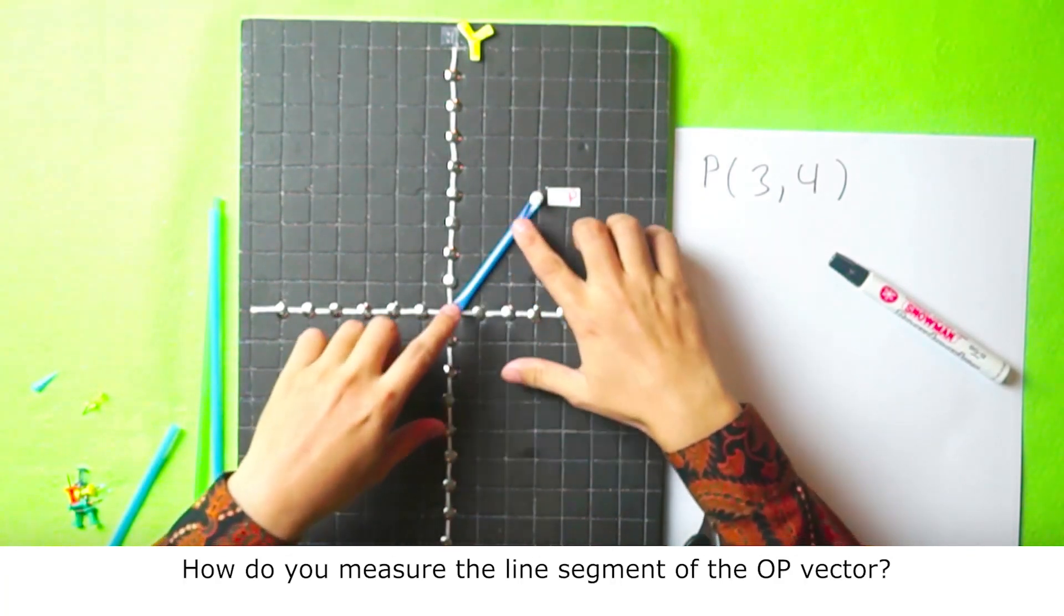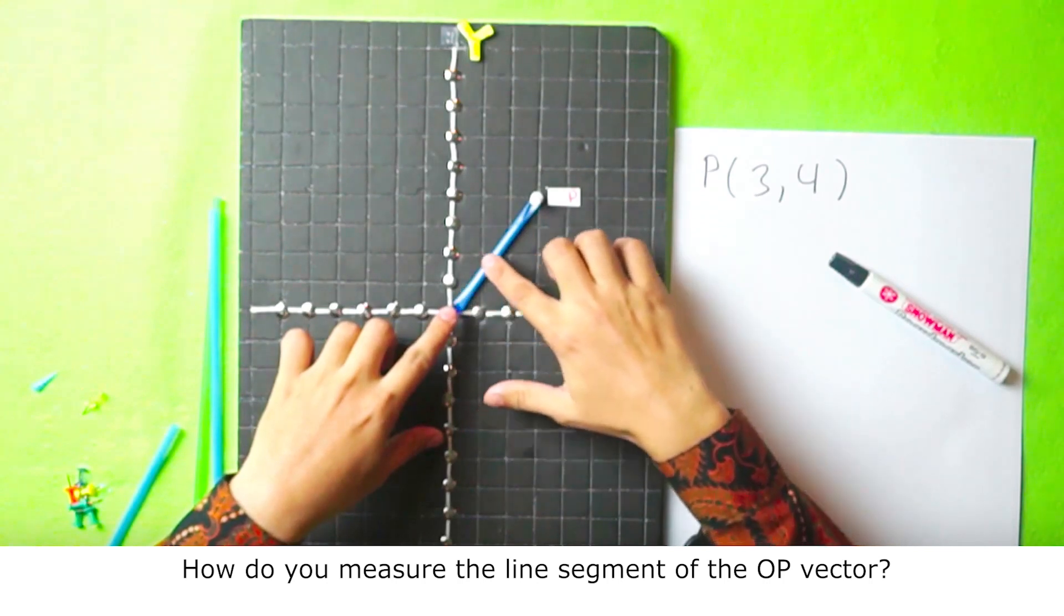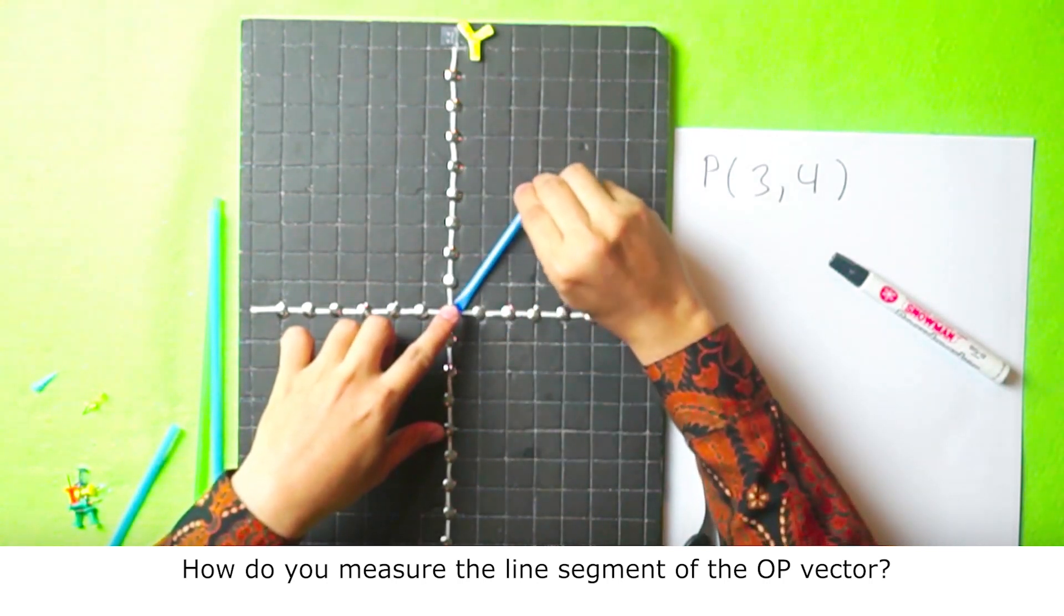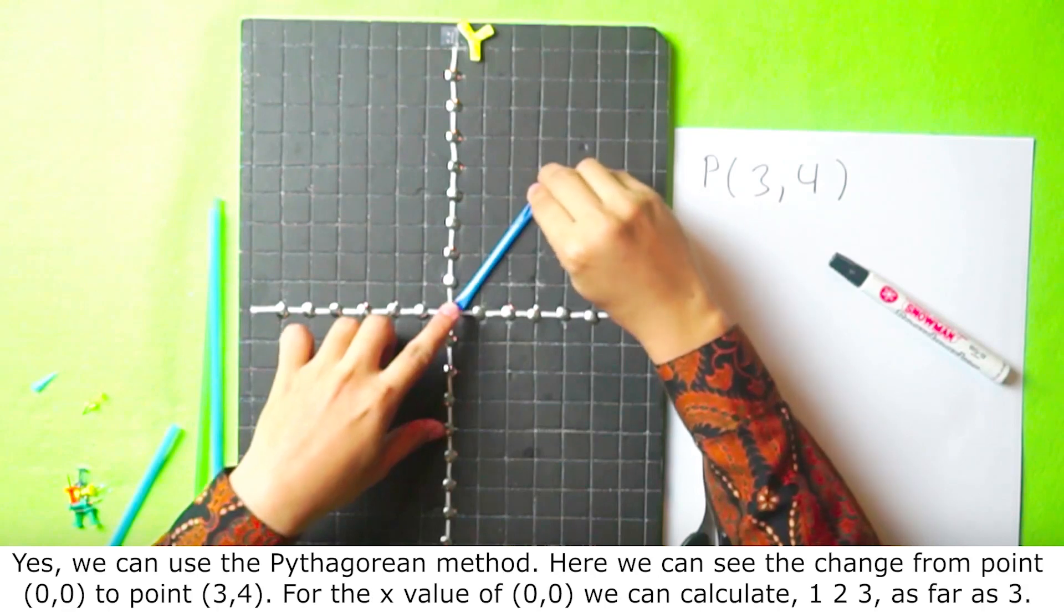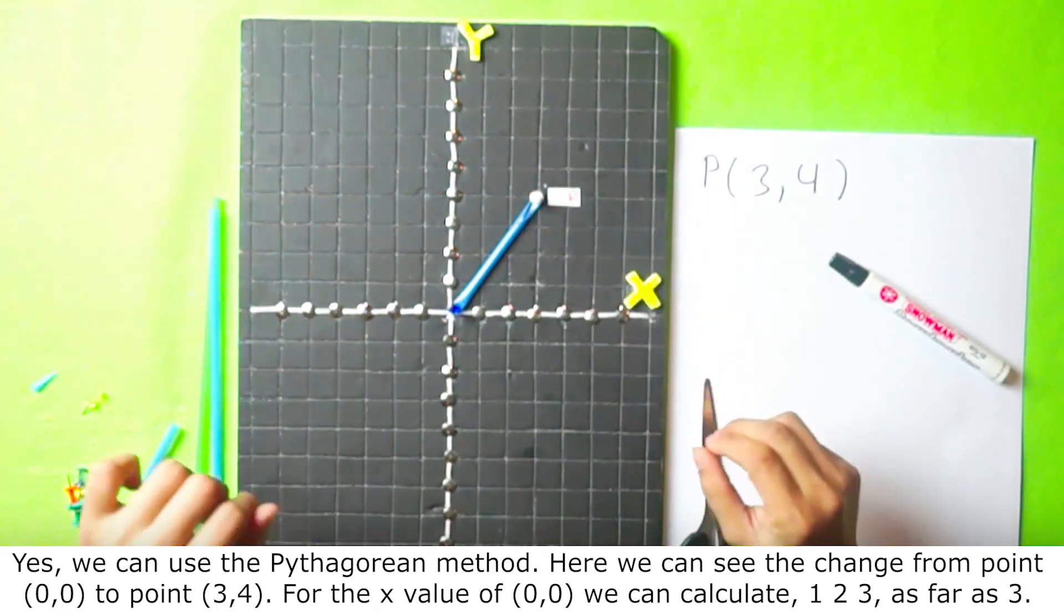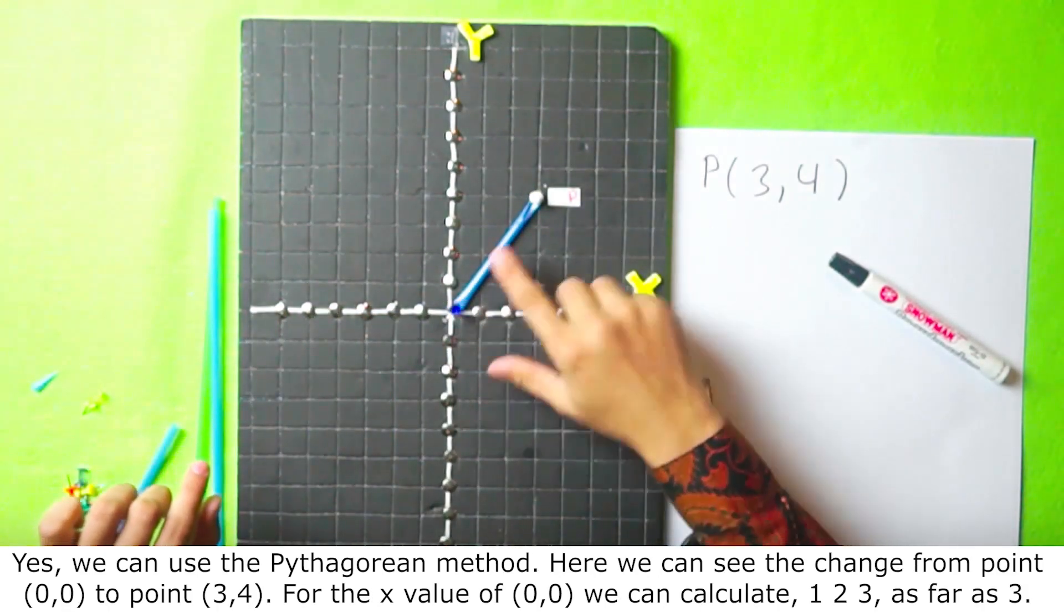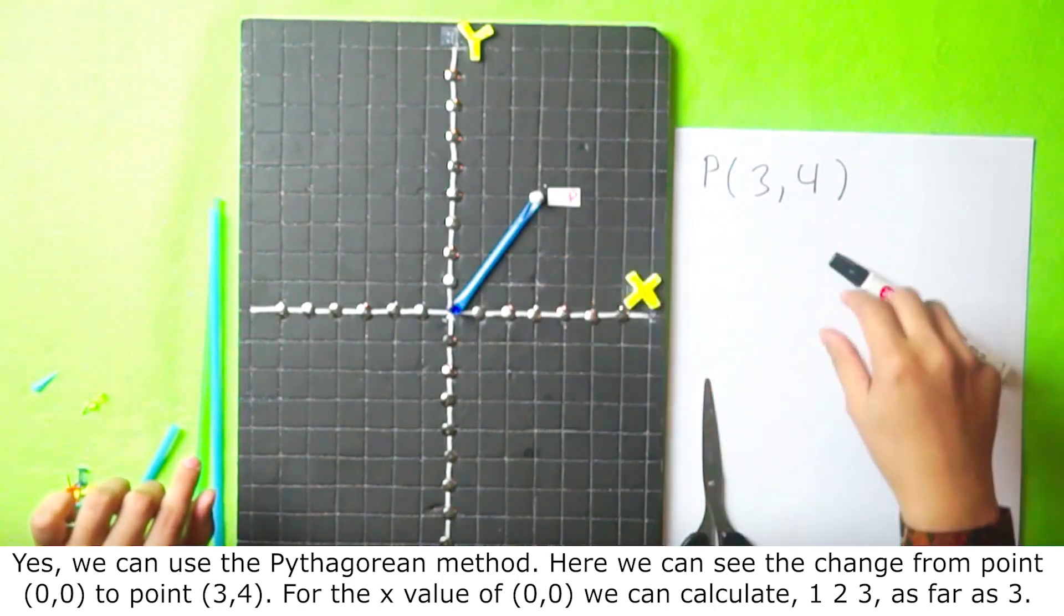How do you measure the line segment of the OP vector? Yes, we can use the Pythagoras method. Here we can see the change from point 0, 0 to point 3, 4.